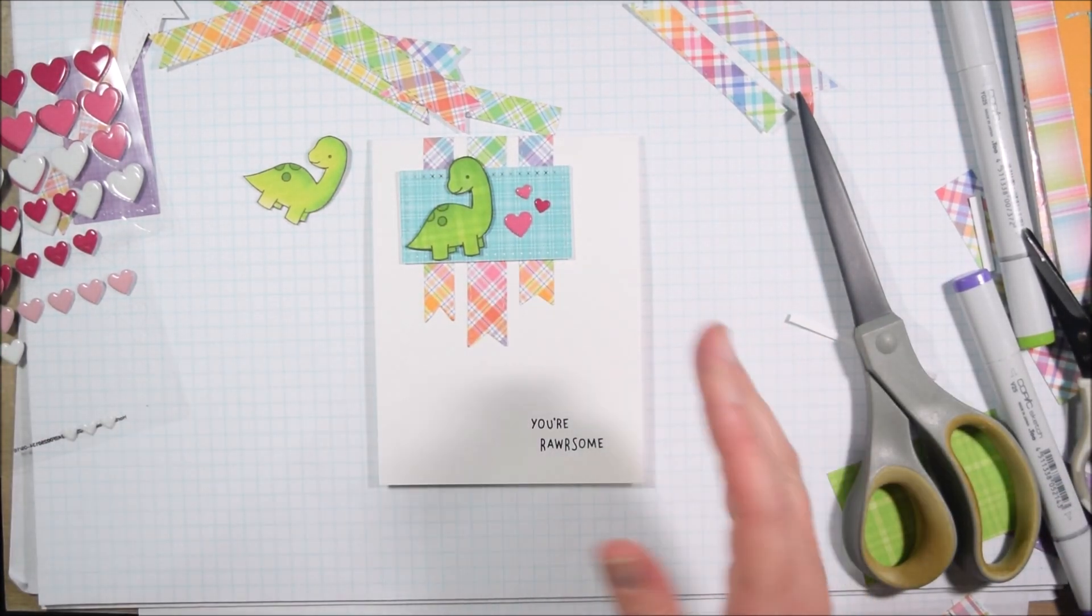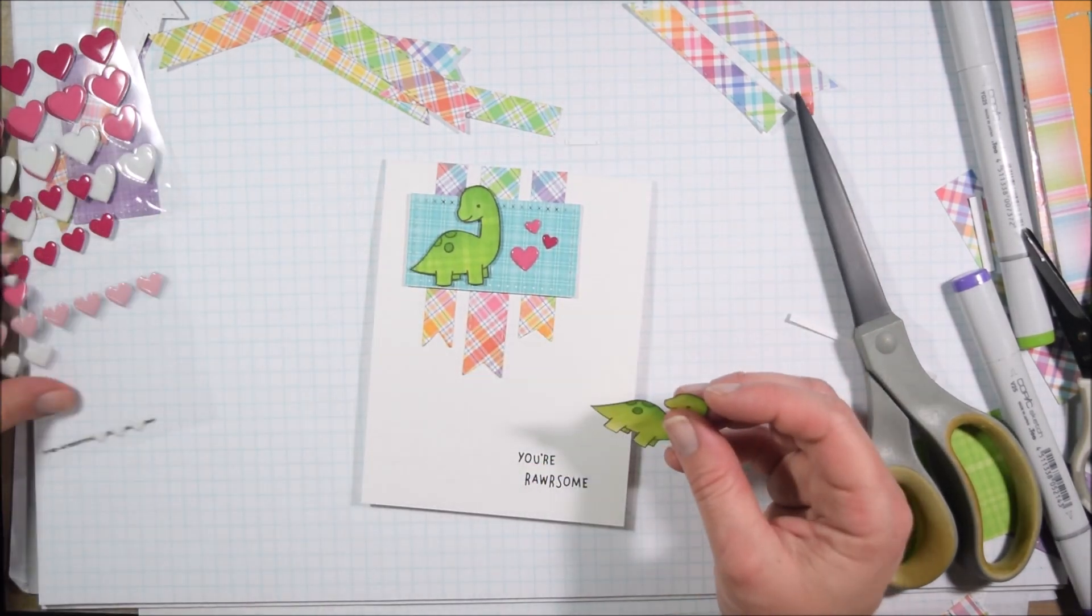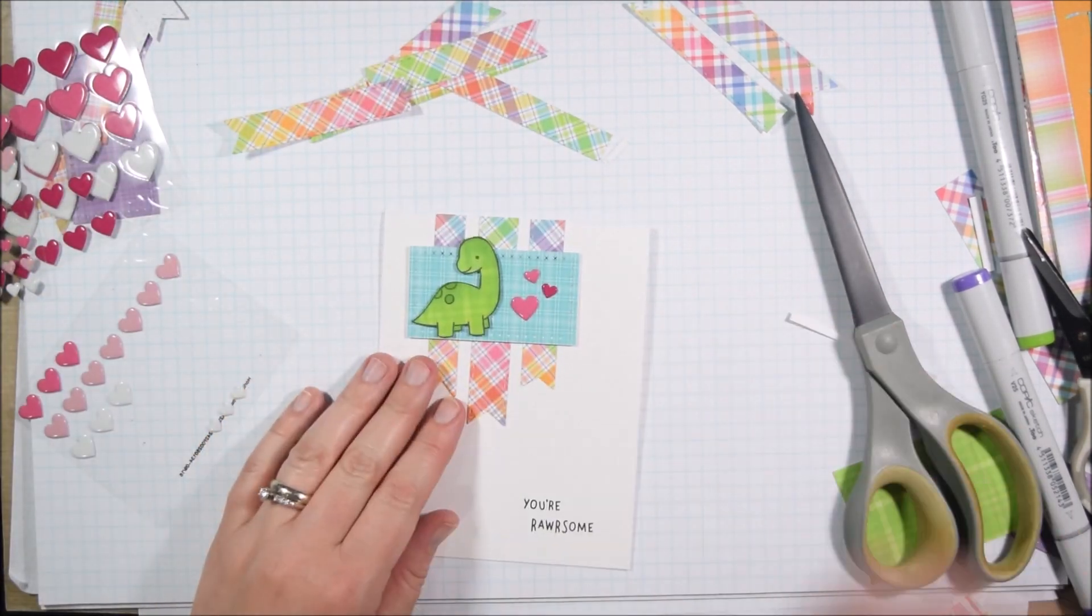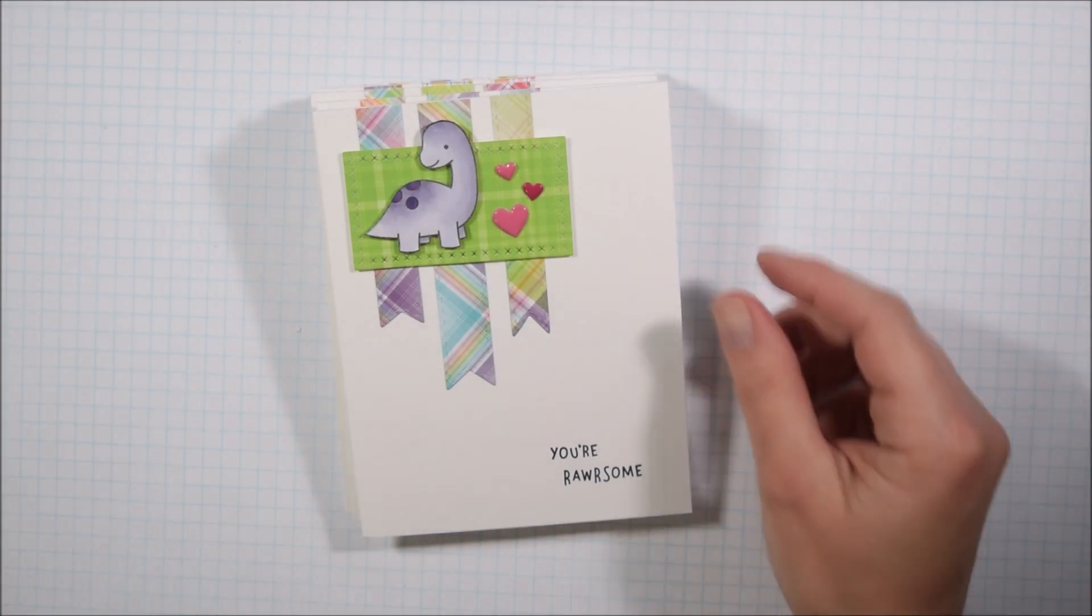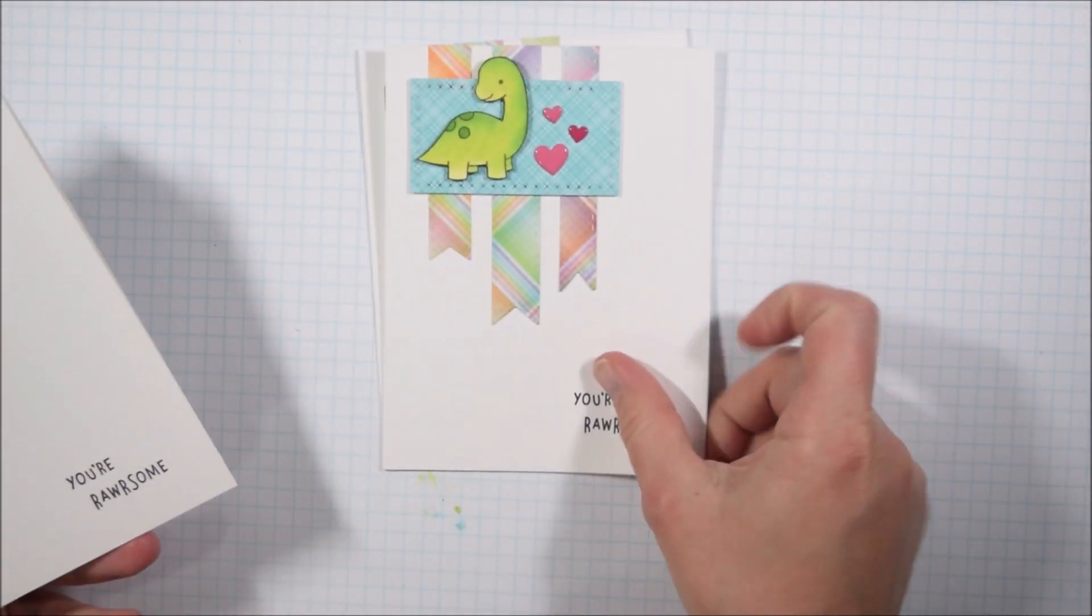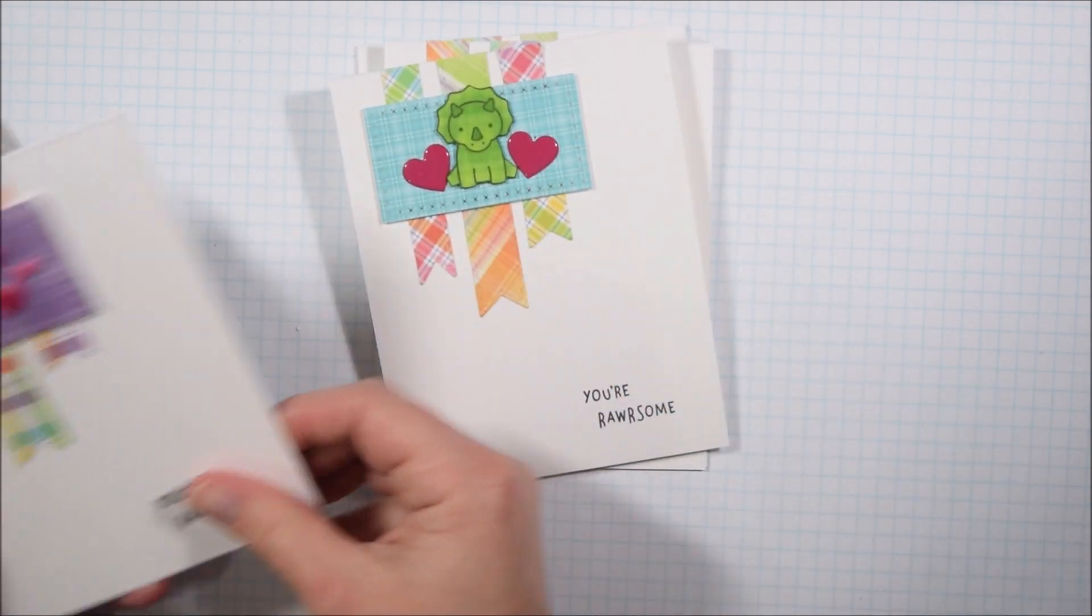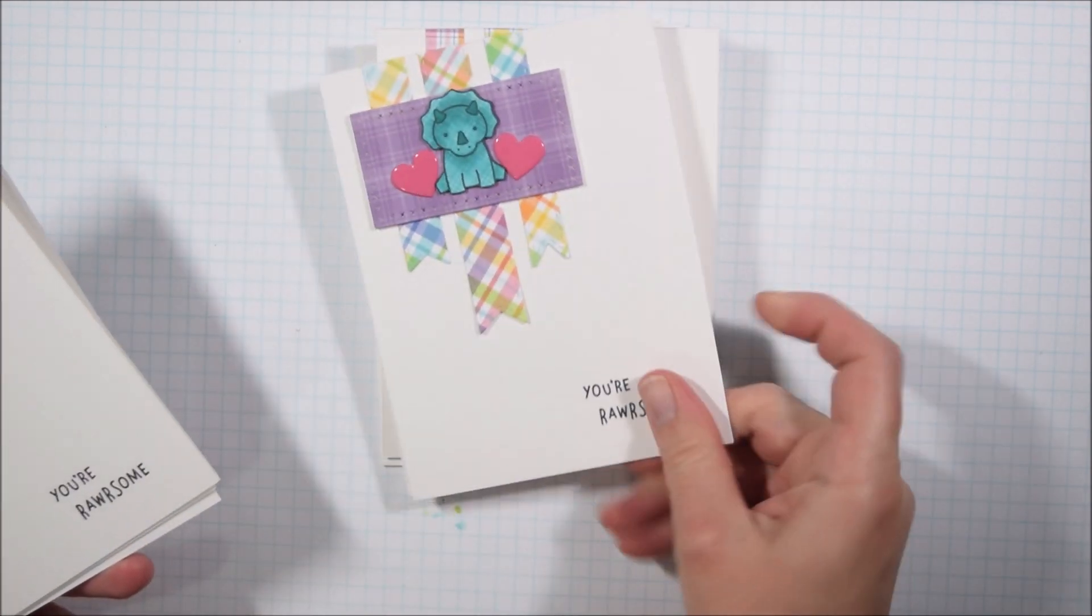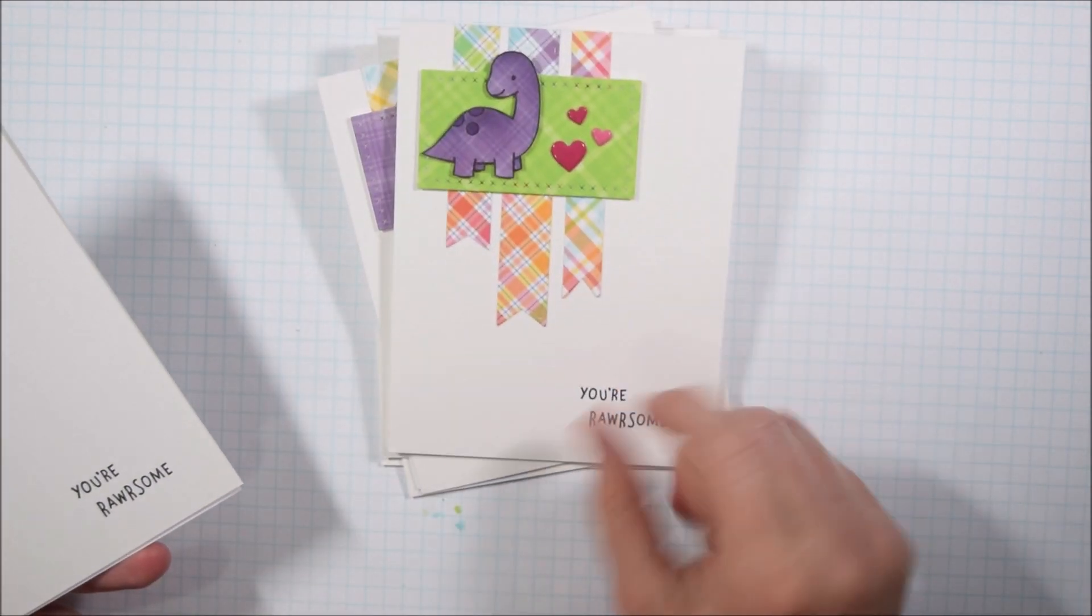So I have a whole bunch of enamel type hearts. These ones I think are from the Target dollar spot, so I can't find them anymore. But I just kind of place those in a little arrangement around the dinosaurs to use up some more supplies. And then here are my eight finished cards, kind of following all that procedure all the way through.